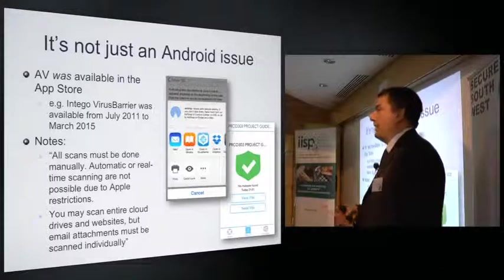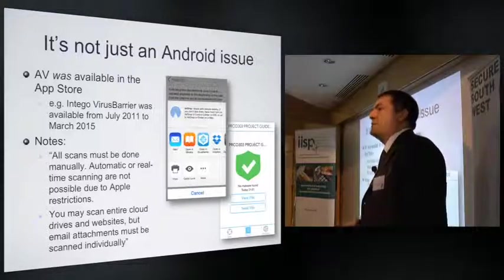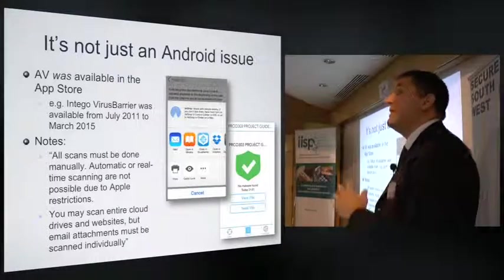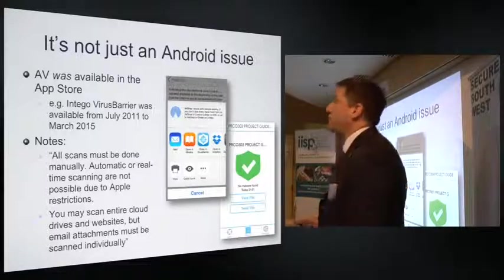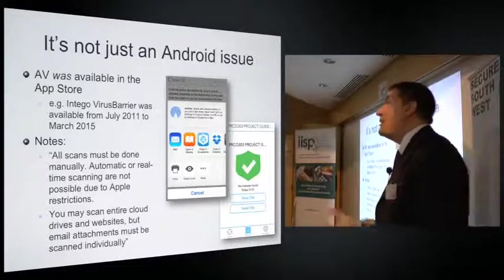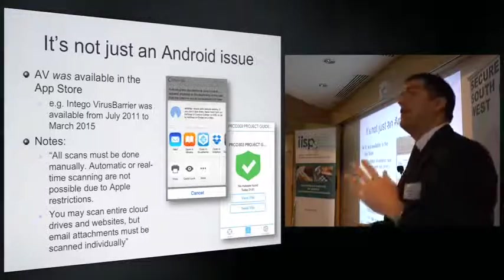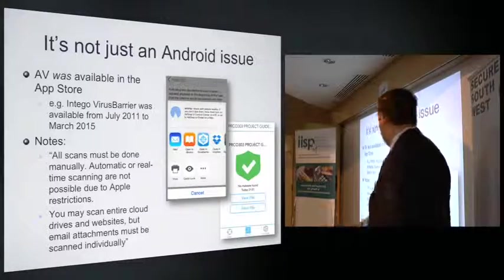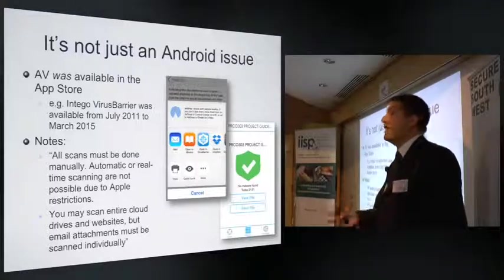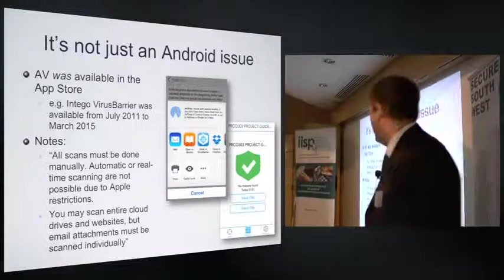A program called Intego VirusBarrier for iOS — which scanned for malware on other platforms, not iOS itself — has very recently been removed and prohibited from sale in the App Store. Apple basically said they don't want these being sold anymore because it's confusing customers, creating the impression that there is malware on iOS itself. So Apple, getting concerned it might be affecting sales, took the decision to pull it.